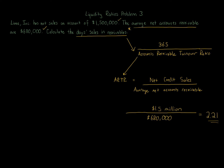Now we do the real calculation — days sales in receivables. We take 365, because the answer is in days, and divide it by the 2.21. So 365 divided by 2.21 gives us 165.16. That is 165.16 days — the answer is in days.